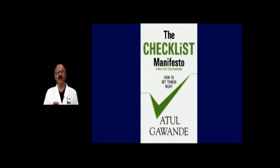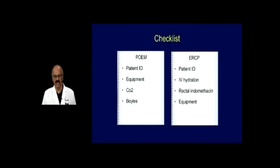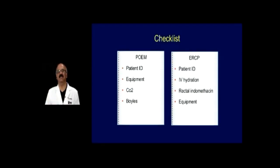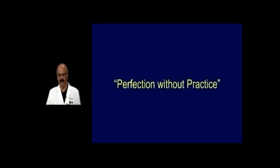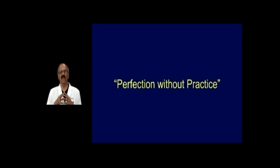We now have a checklist nurse in our unit who checks all cases. Before you get a case, for example if you have a POEM, you know what things have to be checked — whether you have carbon dioxide blowing, not oxygen. If you have an ERCP, you have to know whether rectal indomethacin is given. These checklists are very important for the trainee to know. All procedures should have a checklist. Initially in your training period, you should be the checklist nurse so that you get used to this. Practice has to be done in a very graded, good manner. Otherwise you can develop problems.